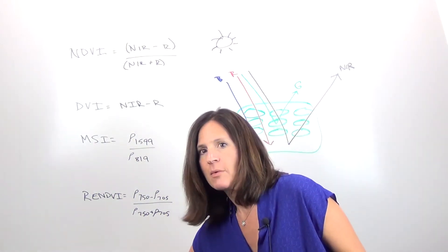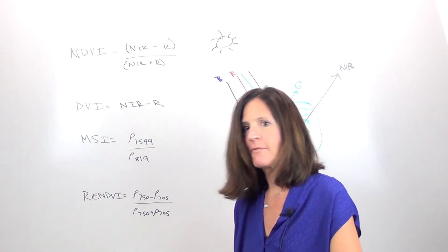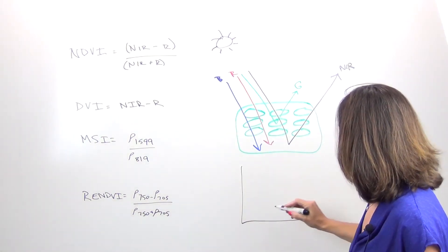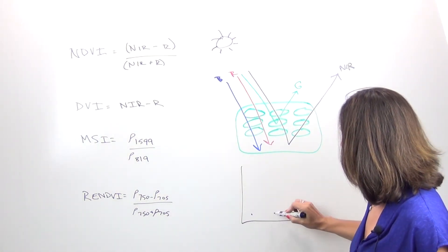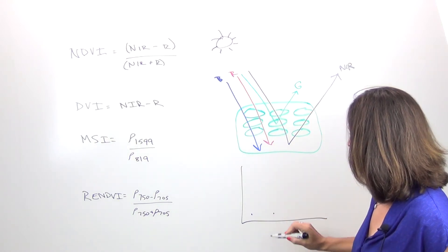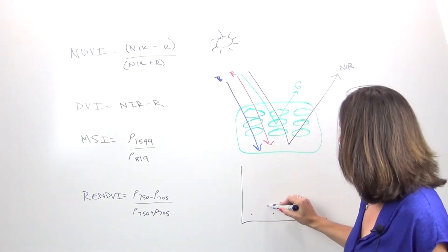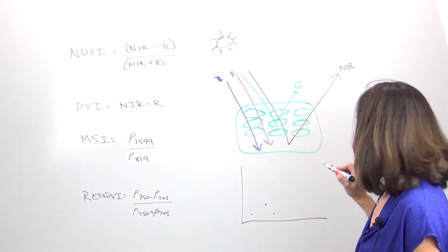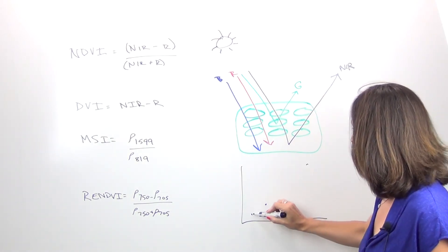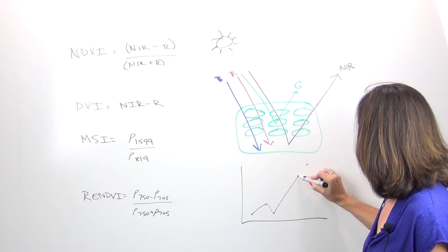And then what we get when we look at an image is a spectral plot for vegetation where you can imagine that the blue and the red values are going to be low, the green is going to be a little higher, and the near infrared is going to be really high. So you see this spectral plot that looks something like this for vegetation.